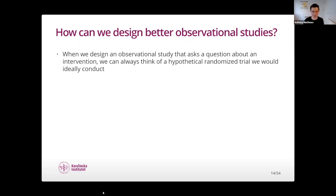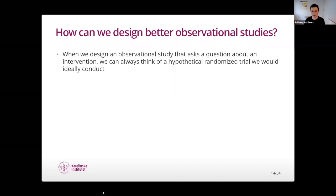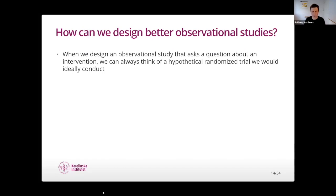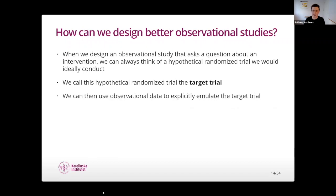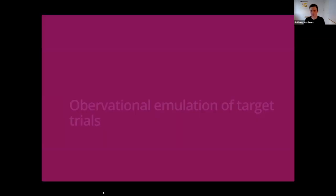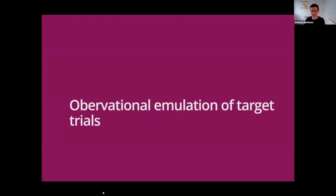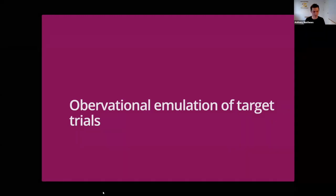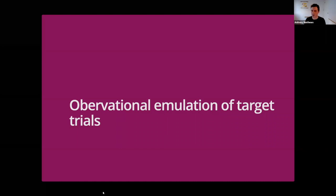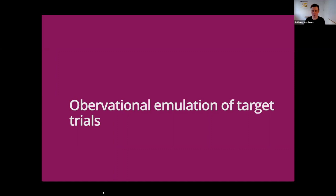A lot of the current work is figuring out how to design better observational studies that ask questions about interventions when we can't carry out a randomised trial. When we design such a study, we can always think of a hypothetical randomised trial we would ideally conduct. We call this hypothetical randomised trial the 'target trial,' and we can use observational data to explicitly emulate it. This is the observational emulation of a target trial — essentially an observational study that asks a causal question about an intervention, designed in the same way as a randomised trial.